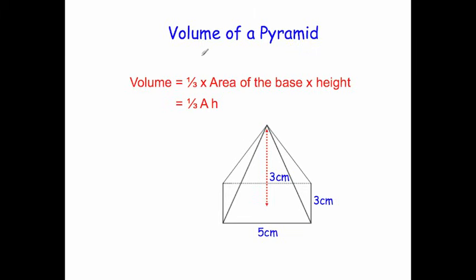In this video we're going to look at how to find the volume of a pyramid. The volume of a pyramid is given by the formula one-third times the area of the base times the height. That's sometimes written as V = 1/3 A h, where A is the area of the base and h is the perpendicular height.